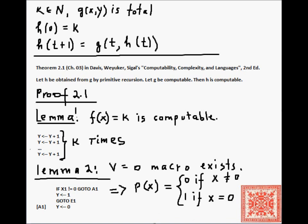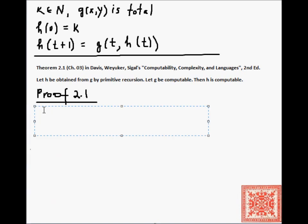These are the two things that we needed to write this program that computes h. So let's write the program that computes h. We already know that h is total, so now to prove that it is computable, we have to write a program that will compute h of x for any natural value of x.